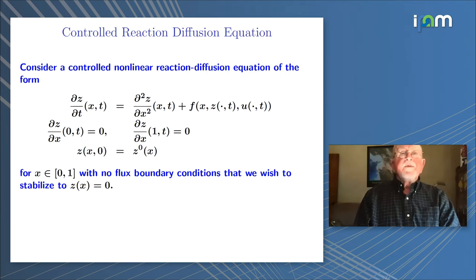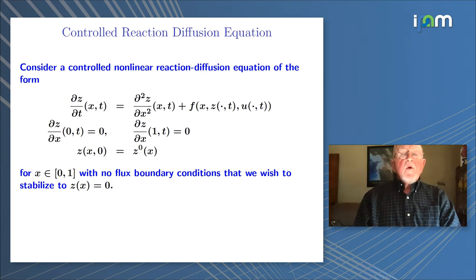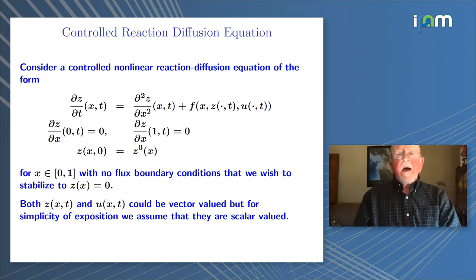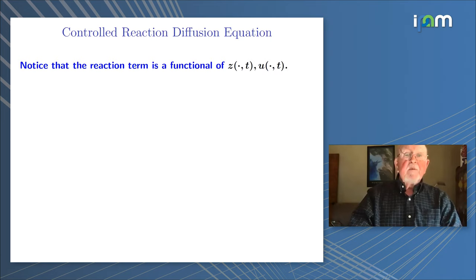Consider a controlled nonlinear reaction-diffusion equation. The diffusion term is the one-dimensional Laplacian, and the reaction term is the F term. I'm going to put Neumann boundary conditions on — these are no-flux boundary conditions. We could do this in vector values, but the notation is horrendous even in the scalar case. Conceptually, there's no reason why what I'm about to discuss doesn't extend to the vector-valued situation.